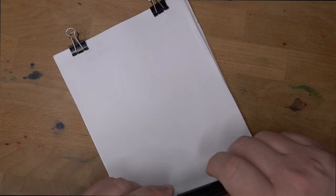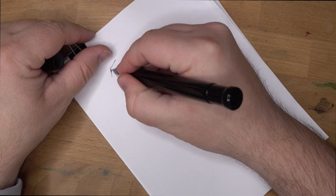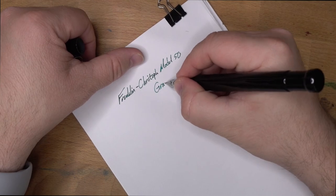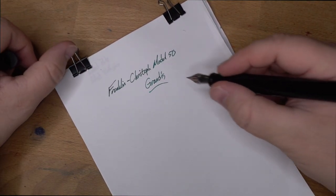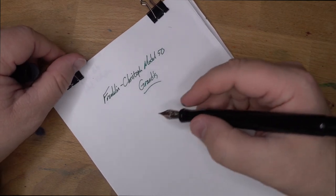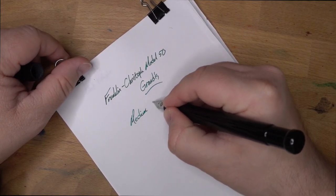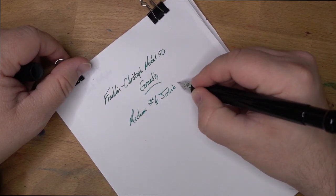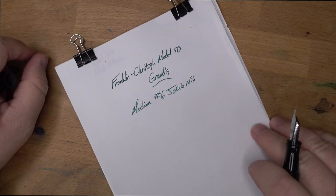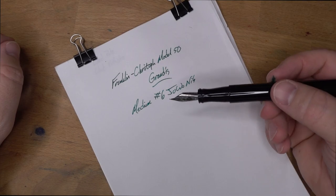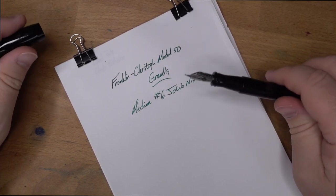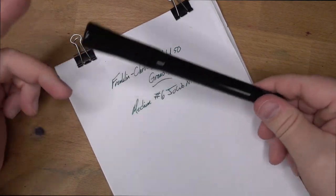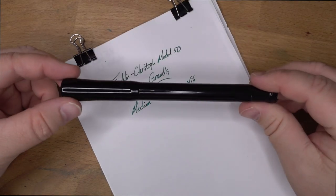Okay. So, here we have the Franklin Christoph Model 50 Grandis. That's how you spell it. I don't know why. It just is. Grandis. This is a medium nib. Medium number six. Jowo nib. And you can get these in steel. This is a regular stainless steel one in medium. No grind or anything like that. And with this configuration, this pen goes for $175 right now on initial pen offering. And it'll go up to, I think, $200 or so when that is over.